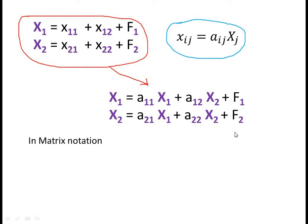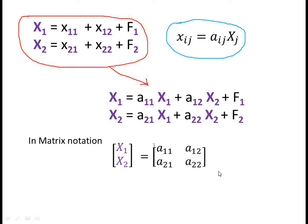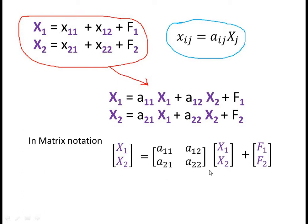In matrix notation, we write the output vector of x1 and x2 equals the input coefficient matrix of a11, a12, a21, a22 multiplied by the output vector of x1 and x2, plus the final demand vector of f1 and f2. The matrix of a11, a12, a21, a22 is called the input coefficient matrix, and the vector of f1 and f2 is called the final demand vector.